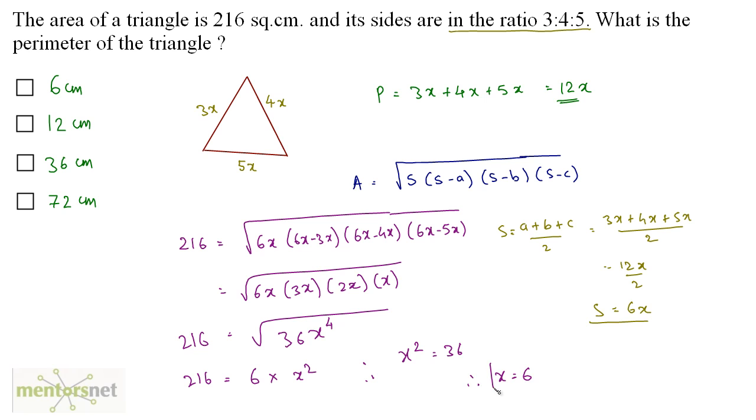Therefore x equals 6. Now we can find the perimeter: perimeter equals 12x, which is 12 times 6, giving 72 centimeters.